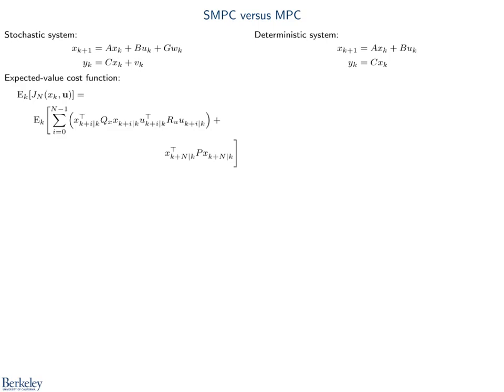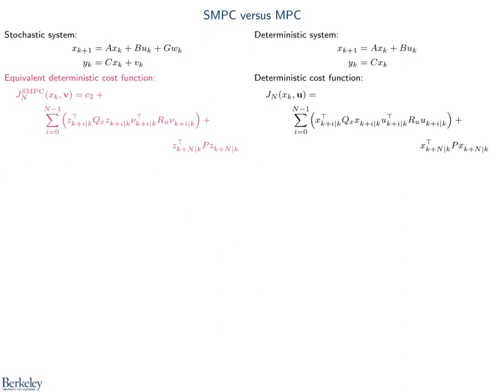For SMPC, we have the expected value cost function. As mentioned, this is a quadratic deterministic form, shown here in red. This is identical to the standard MPC cost, except for a change of variables. This is also shown here in red.